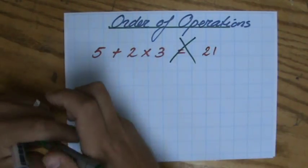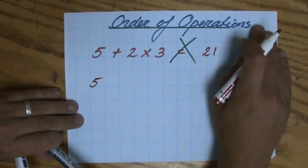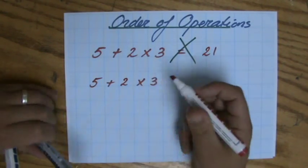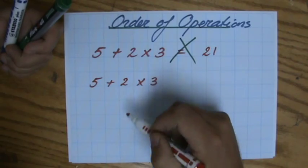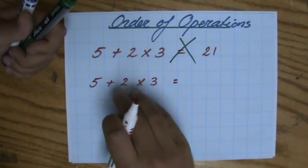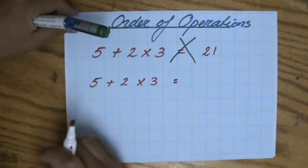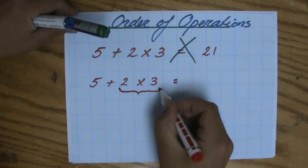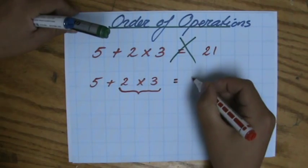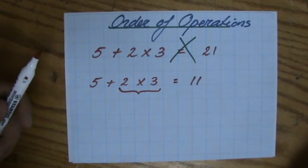The answer is not 21 because I did not do the correct order of operations. Plus and times are different operations and multiplication is what we call more important than addition. Therefore I have to multiply first before I add. So the order of operations will be 2 times 3, which is 6, plus 5. So the answer actually is 11. The order of operations matters.